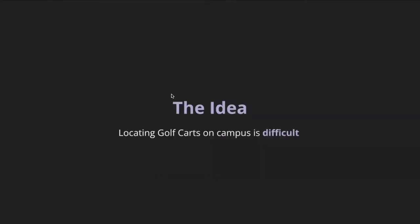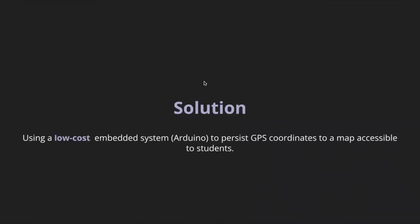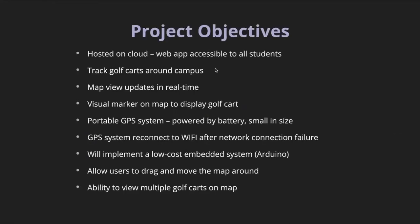Diving into the introduction, we figured out that tracking or finding the golf carts on campus is really difficult, so that's the idea for the project. The solution we had is we're going to be using a low-cost embedded system, an Arduino, to process GPS coordinates to a map accessible to students, so that students are able to figure out where the golf carts are on campus.